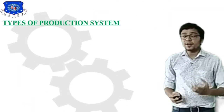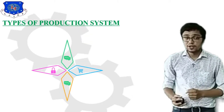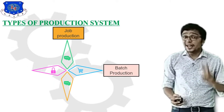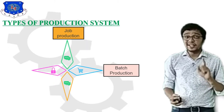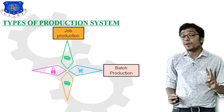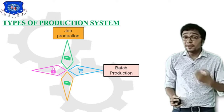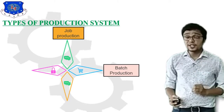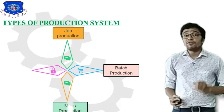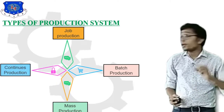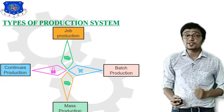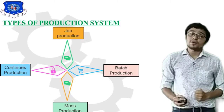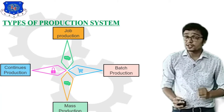The first question is: what are the different types of production systems? There are mainly 2 broad types of production. First is Intermittent production system, and number 2 is Flow type production system. In Intermittent production system there are mainly 2 types: Job production and Batch production. In Flow type production system there are also 2 types: Mass production and Continuous production system.